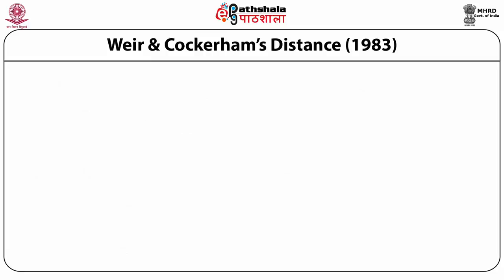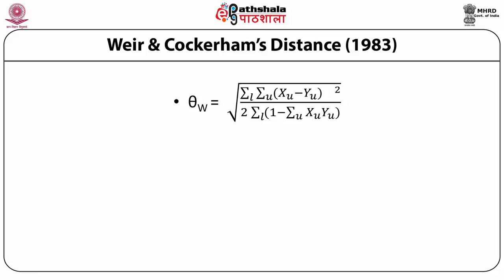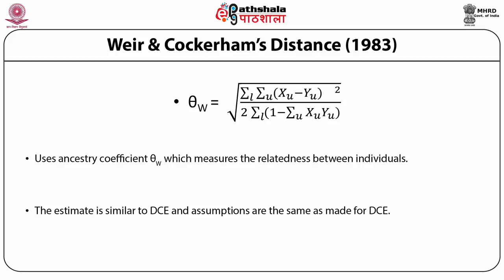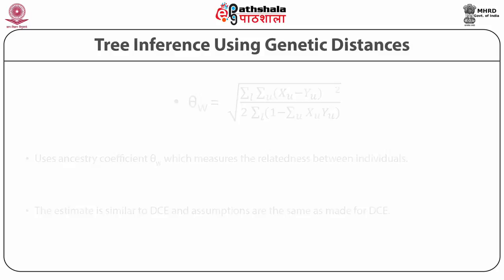Weir and Cockerham's distance was given in 1983, with the formula shown in this slide. This distance measures the relatedness between individuals. The estimate is similar to DCE (chord distance measure) and the assumptions are the same as those made for DCE.